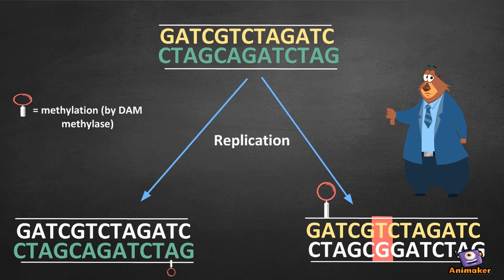This is done by observing the methylation state of the strands of DNA. Newly synthesized DNA will not yet be methylated while the parent strand will be methylated. We say this DNA is hemimethylated.